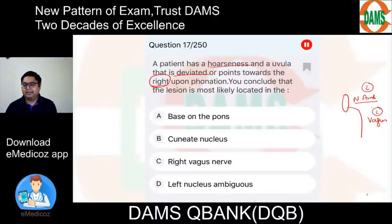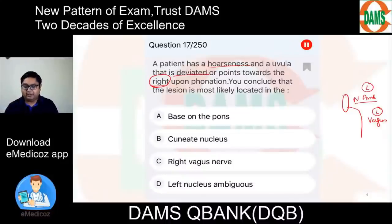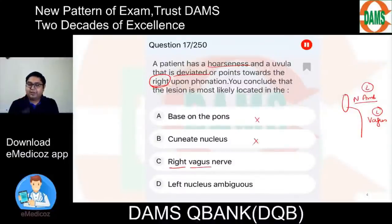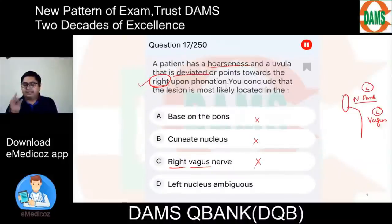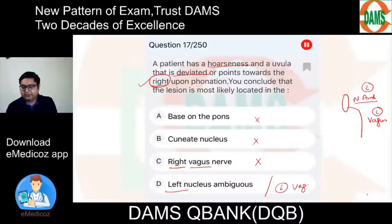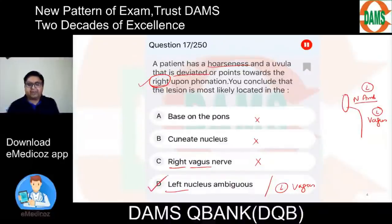Base of pons cannot be the answer. Cuneate nucleus — no. Right vagus — no, because the uvula is deviated to the right indicating the right side is normal. Left nucleus ambiguus or left vagus — both can lead to these clinical features. Therefore, D — left nucleus ambiguus — is the answer. I hope you have understood this. Keep following us for such clinically integrated questions in the future.